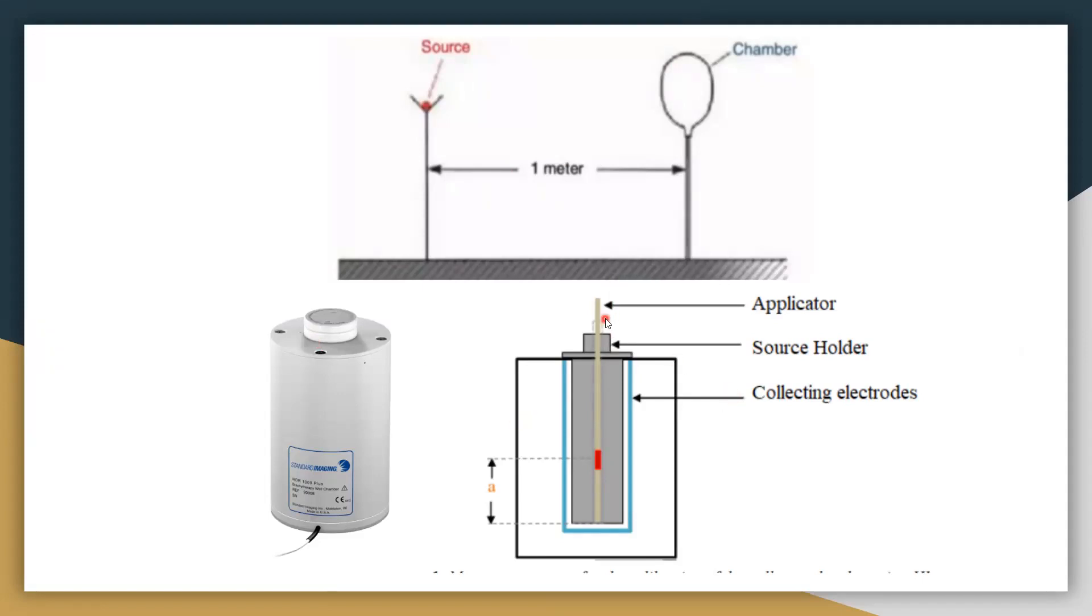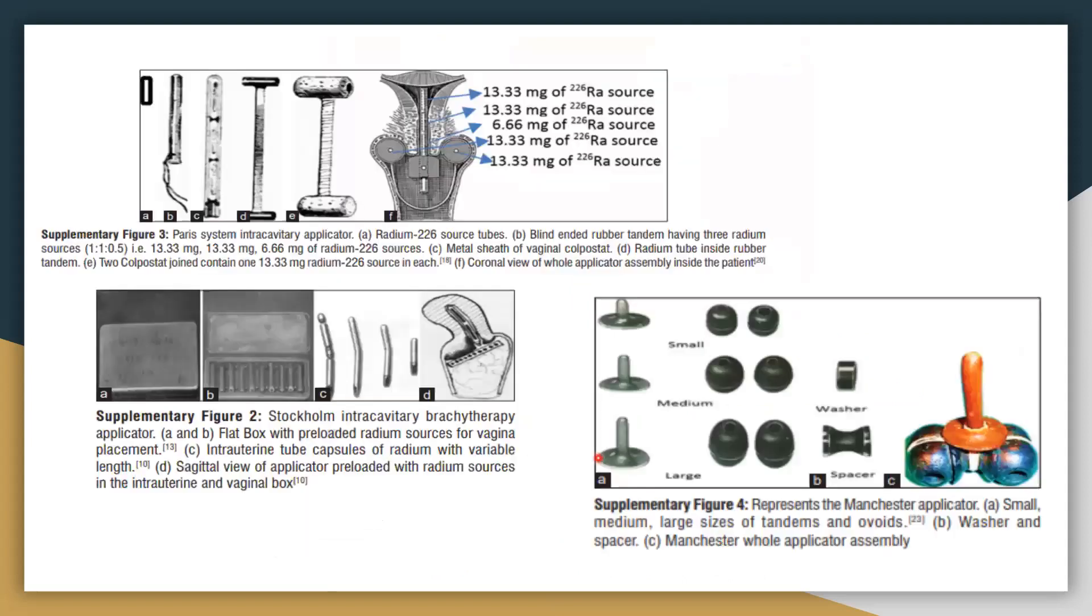So in practice, re-entrant well chamber was used, which has an applicator source holder and the electrodes. The source gives the higher dose at certain position, charge collected, and then air kerma strength was measured. These chambers are calibrated from PSDL, primary standards dosimetry labs. That's a classical model, radium sources replaced, and the typical source stays in a different position for the typical pear-shaped isodose lines.